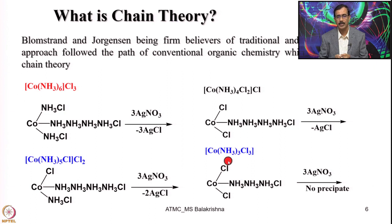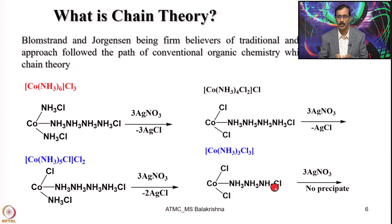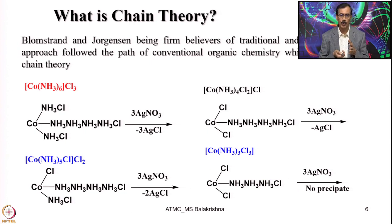When they had 3 ammonia and 3 chloride in a neutral complex — no chlorides in the outer sphere — they expected at least 1 silver chloride precipitation. That did not happen. When they treated with silver nitrate, there was no precipitation of silver chloride. So the chain theory miserably failed, but still they were proposing, arguing and criticizing the systematic work carried out by Werner.